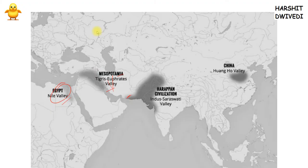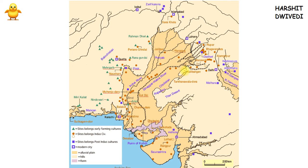It was quite a big civilization — its area was around 1.3 million square kilometers, that is 13 lakh square kilometers. The most important rivers here were the Saraswati and the Ghaggar-Hakra.